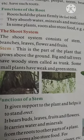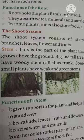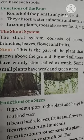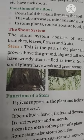Now, the shoot system. The shoot system includes branches, leaves, flowers, and fruits.